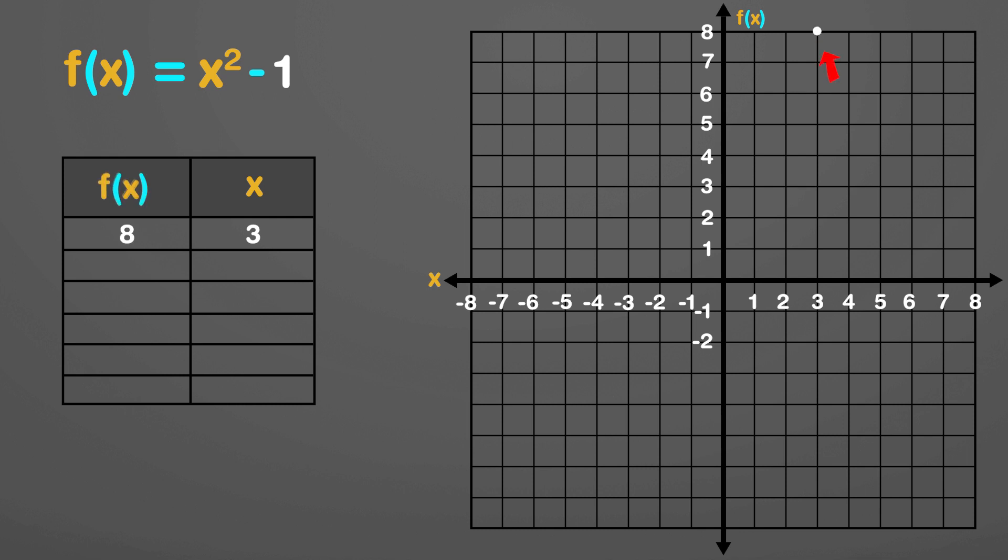For x equal to minus 3, the output is again 8, as the square of a negative real number is always a positive number.